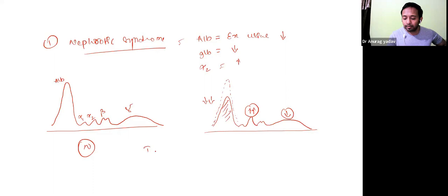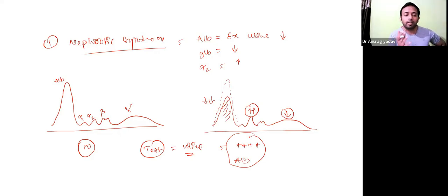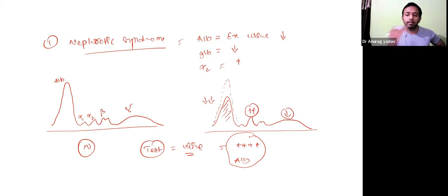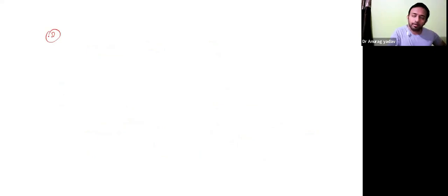When you see this kind of pattern, the next step is to test the patient's urine sample. You will see it is very positive for albumin — the urinary excretion of albumin is very high. Visibly the urine may be turbid. If you do a urine dipstick method or protein estimation, it will definitively be very high. That is how you identify the nephrotic syndrome pattern on electrophoresis.